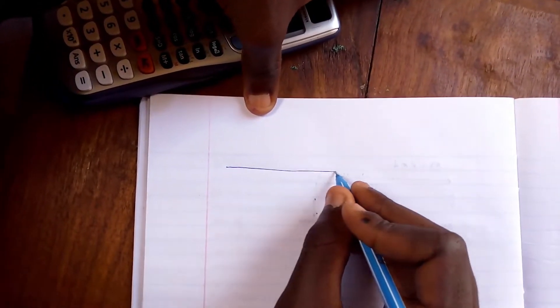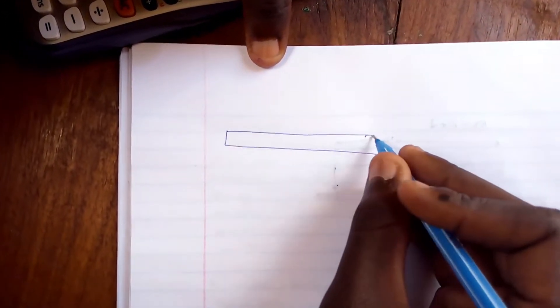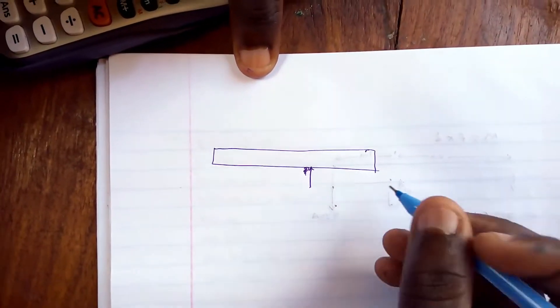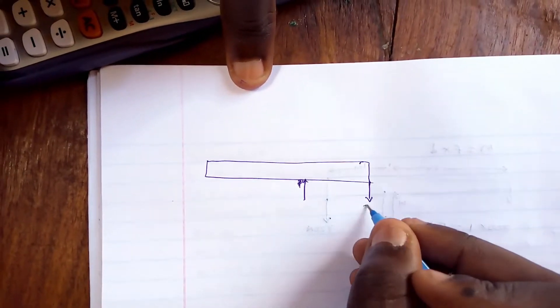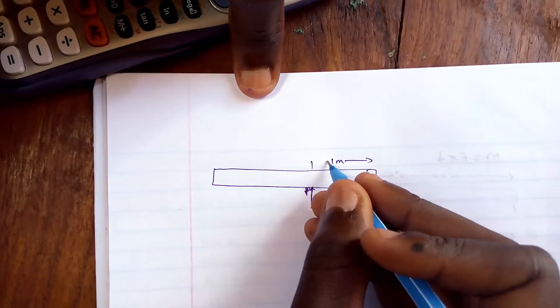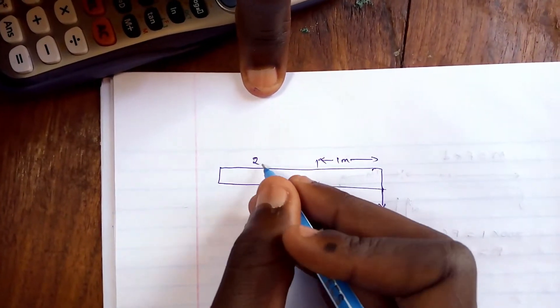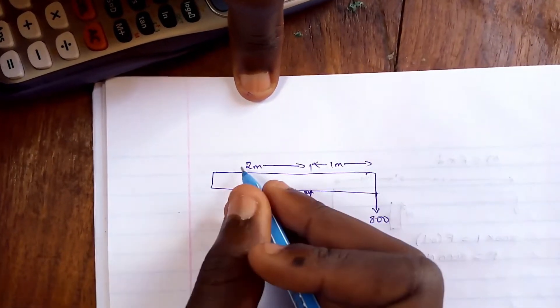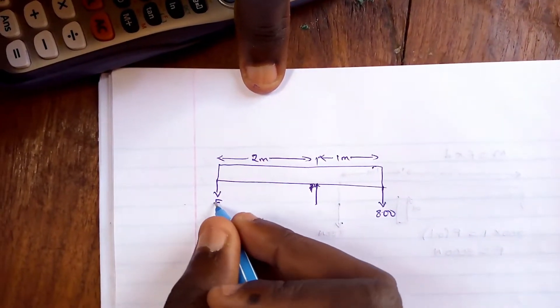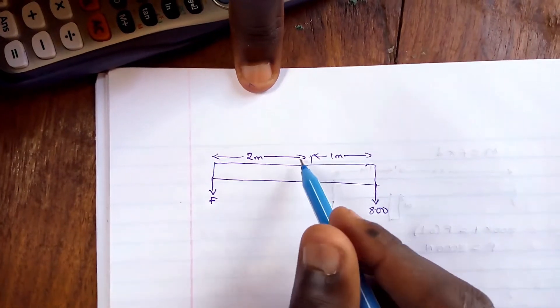Let's solve it now. So what we have is a crane. Let's make it like this, and then this is the pivot P. When you put the counterbalance 800 newtons here, this is the distance of one meter here, and then this is two meters, this distance over here. Then we should put the load here which is F.